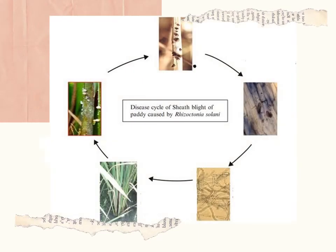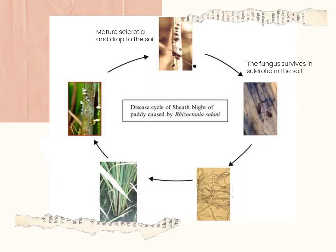Sclerotia and mycelia in infected plant debris are two primary sources of inoculum. During the cropping season or at harvest, sclerotia fall on the ground and serve as survival structures from one cropping season to the next. They survive for a long period in the soil — up to two years in temperate rice production areas — and frequently accumulate in the field over time. Flood water movement and irrigation support the dispersal of sclerotia and infected plant debris.